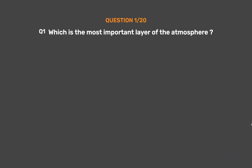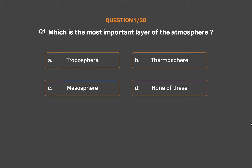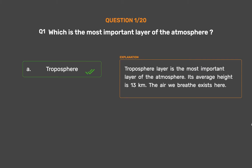Question number 1: Which is the most important layer of the atmosphere? Option A: Troposphere. Option B: Thermosphere. Option C: Mesosphere. Option D: None of these. The correct answer is Option A, Troposphere. Troposphere is the most important layer of the atmosphere. Its average height is 13 kilometers. The air we breathe exists here.